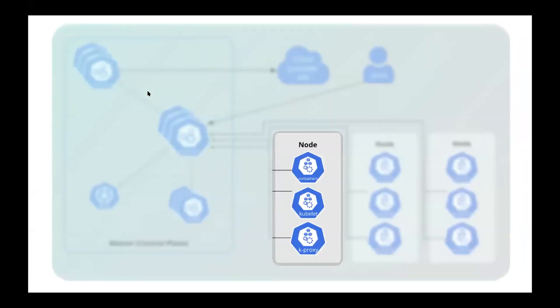We have one or more worker nodes. The master can run on the same machine as a node, but it shouldn't. On the node we have the actual running application — containers running via whatever container runtime you have, probably Docker or containerd. This is managed by kubelet, which runs on the node making and accepting requests from the API server to actually run containers. We also have the proxy, responsible for networking so that pods and containers can communicate with each other.